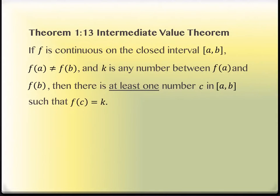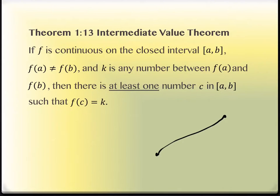So write those in, and then a picture — this is one of those pictures worth a thousand words. That sounds really complicated, but it's really not complicated at all in terms of a diagram. So let me diagram what it's referring to. You have a continuous curve, and the endpoints are different Y values — no jumps, no gaps, nothing like that, and the Y values are different.